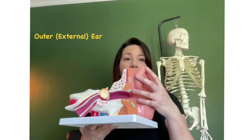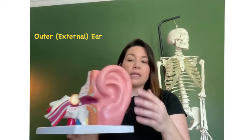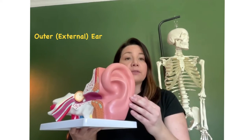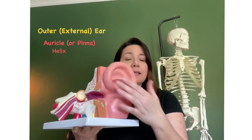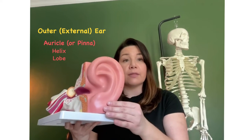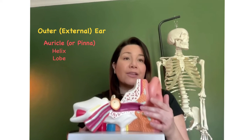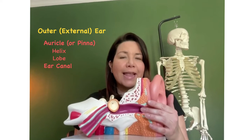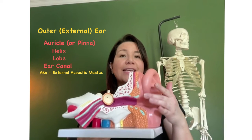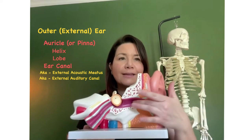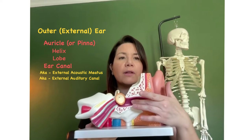The outer ear consists of the part of the ear that you can actually see — the outer part of the ear. That portion is referred to as the auricle or the pinna. This portion here is referred to as the helix, and this portion here is referred to as the lobe. Now if we go in through the ear, this portion right here is called the ear canal, also known as the external acoustic meatus, or sometimes the external auditory canal. This is the ear canal — still part of the outer ear.